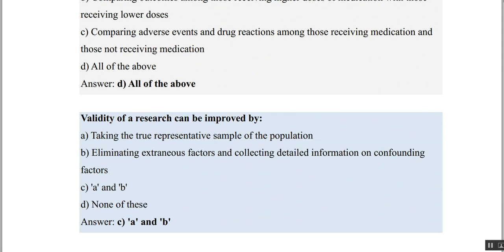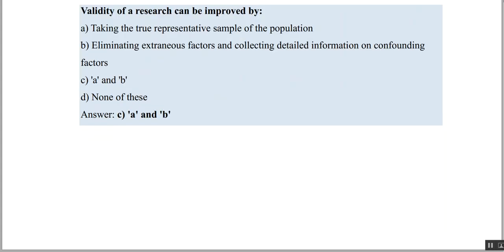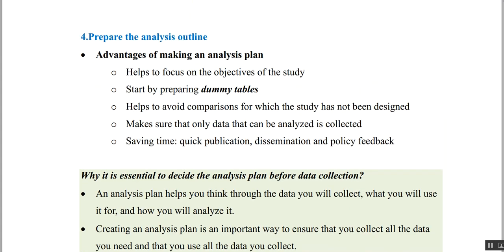Validity can be improved by using a representative sample and by removing all external factors and collecting detailed information on confounding — so A and B are the answer. That concludes the fourth step.